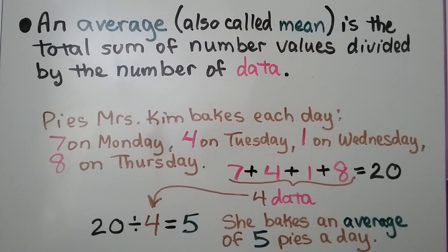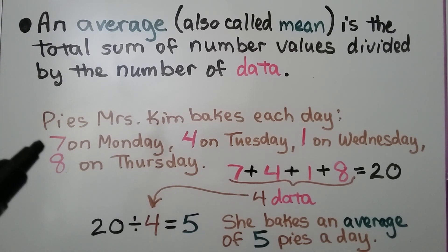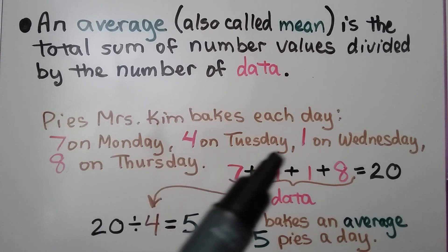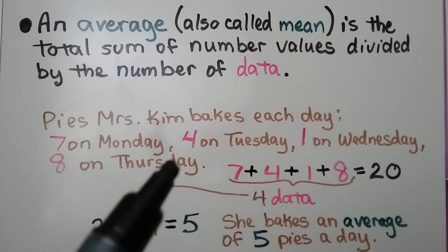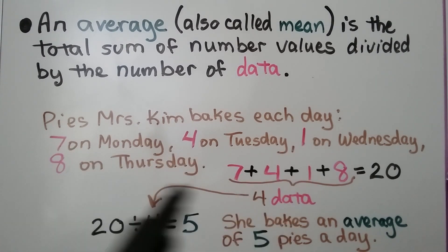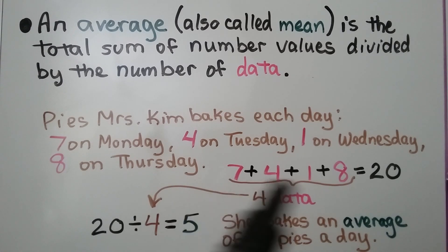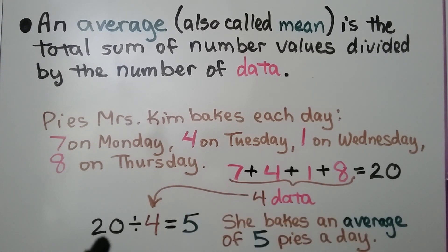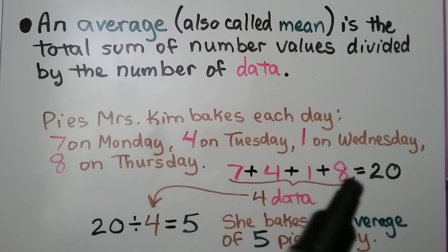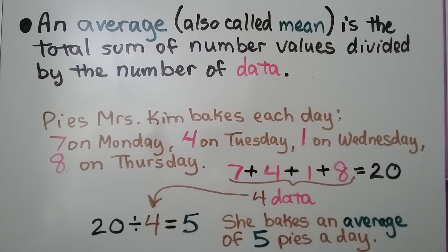An average, which is also called a mean, is the total sum of number values divided by the number of data. For example, for pies Mrs. Kim bakes each day: if she makes seven on Monday, four on Tuesday, one on Wednesday, and eight on Thursday, we add up seven plus four plus one plus eight. We have four add-ins — four amounts of data — and they equal 20. We divide 20 by that number of data, which means she bakes an average of five pies a day.